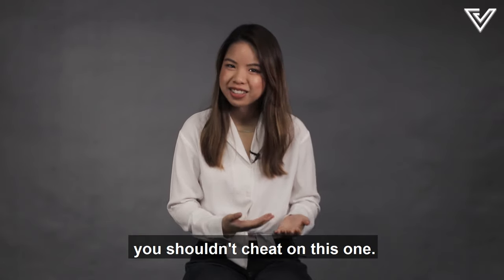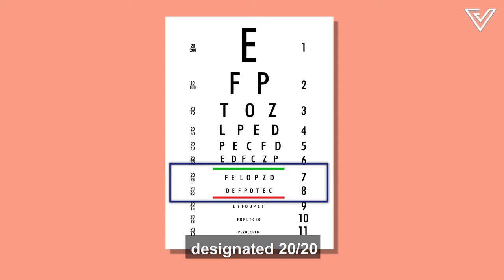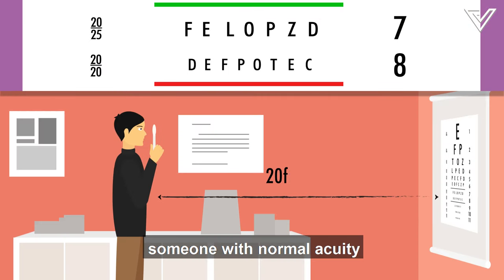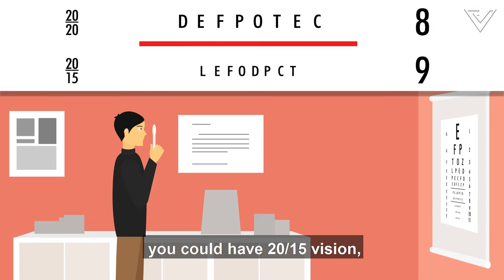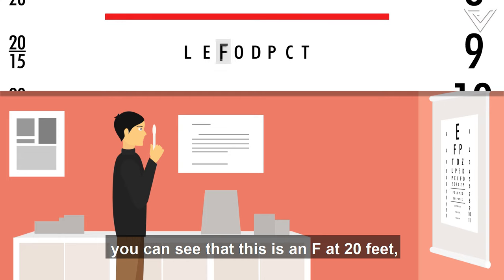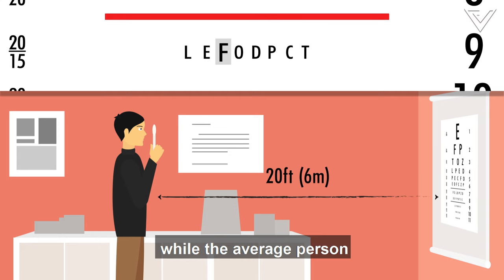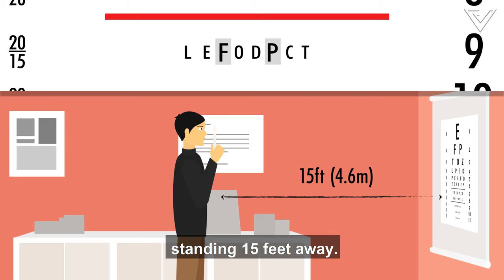Like all other tests, you shouldn't cheat on this one. This line, designated at 20-20, is the smallest line someone with a normal acuity can read from 20 feet away. But having 20-20 vision does not mean perfect vision. In fact, you could have 20-15 vision below this red line here, which is sharper than average. That means you can see that this is an F at 20 feet, while the average person can only tell that this is a P standing 15 feet away.